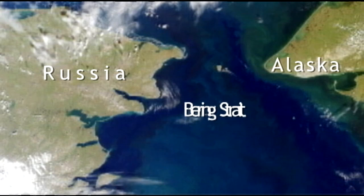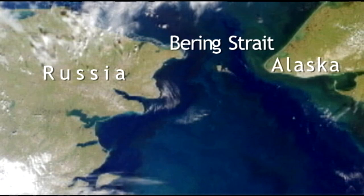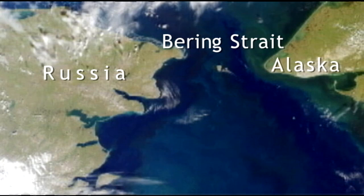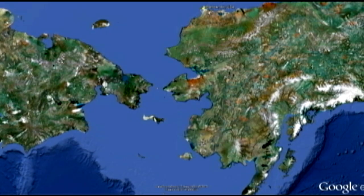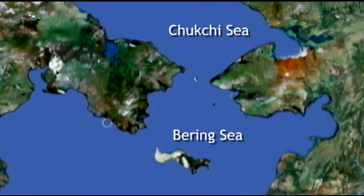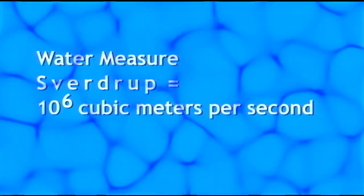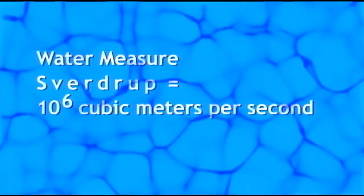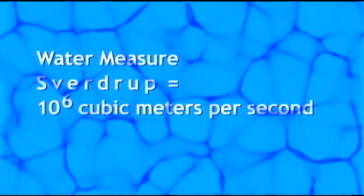The most important current that connects the North Pacific and the Arctic is the current that flows north through Bering Strait, and that current is enormous. It's like having 50 or 100 Mississippi rivers flowing northward between the Bering Sea and the Chukchi Sea. On average, there's about 0.8 Sverdrups coming in, and a Sverdrup is 10 to the 6th cubic meters per second. It's a big oceanographic unit of water flow, so that's a significant amount of water.